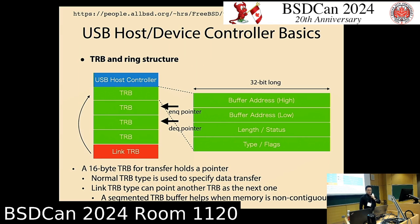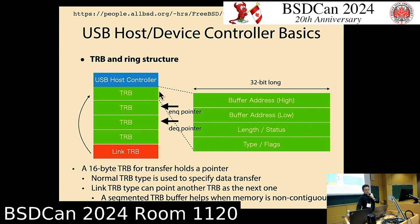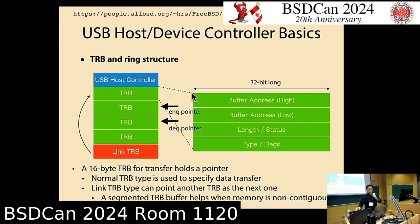Inside the TRB — the Transfer Request Block — is a very simple structure: a 16-byte contiguous memory region. The ring buffer is an array of TRBs, not a linked list. A single TRB does not have a pointer to the next entry. The green type means a normal transfer block, which can hold a pointer to the actual data.